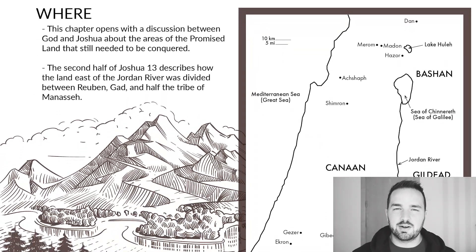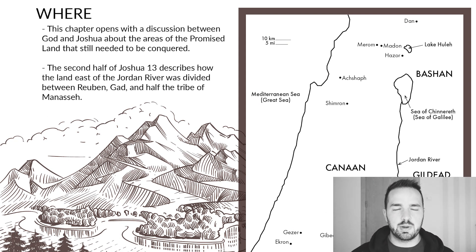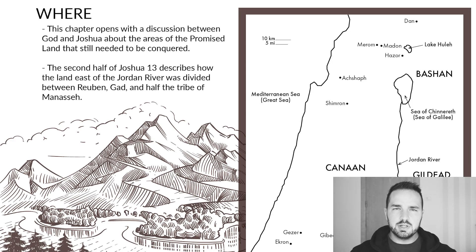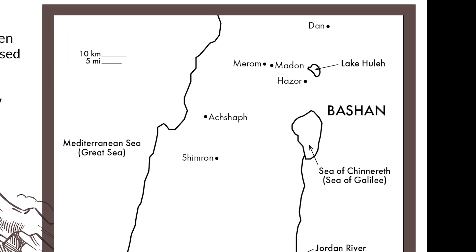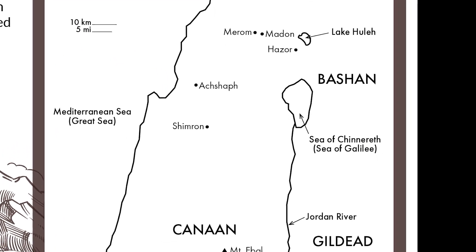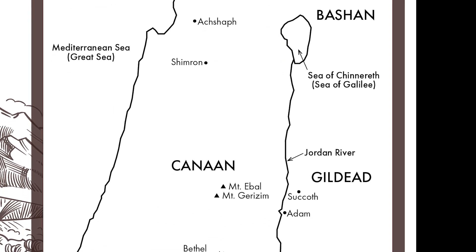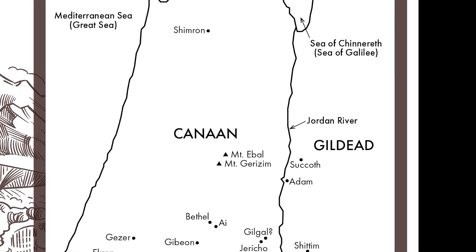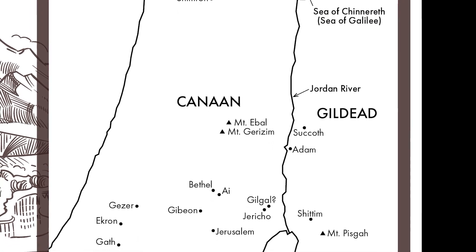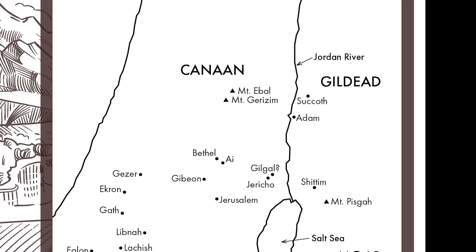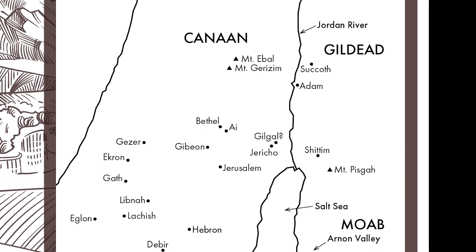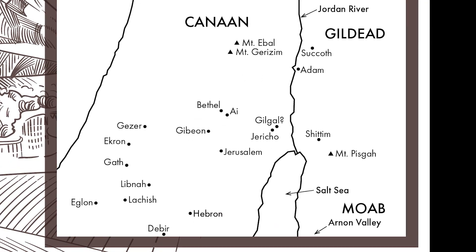Now jump down to our map section. The chapter opens with a discussion between God and Joshua about all the lands of the promised land that still needed to be conquered — places where the enemy hadn't been driven out yet — and those locations were pretty much scattered all over the map. The second half of the chapter describes how the land east of the Jordan River was supposed to be divided up, because two and a half tribes took their land on the east side: the tribes of Gad, Reuben, and half of the tribe of Manasseh.